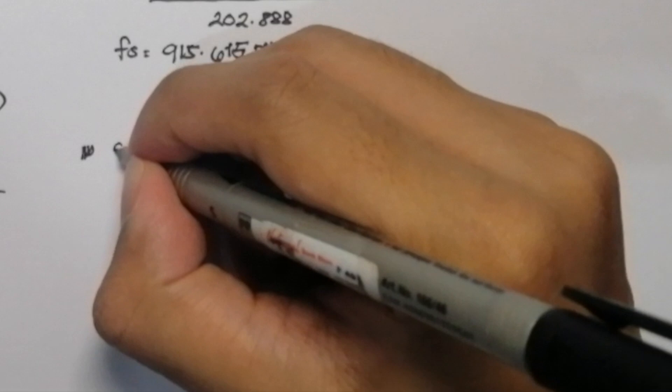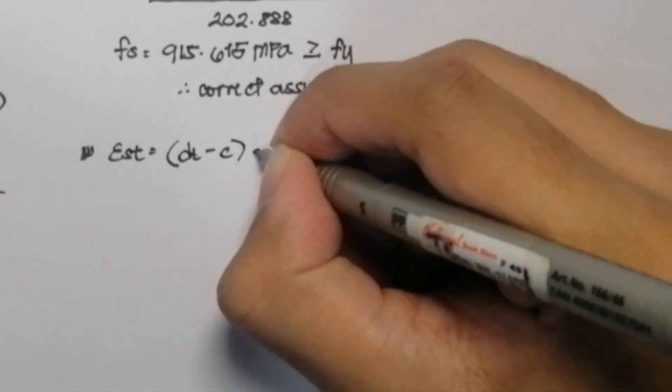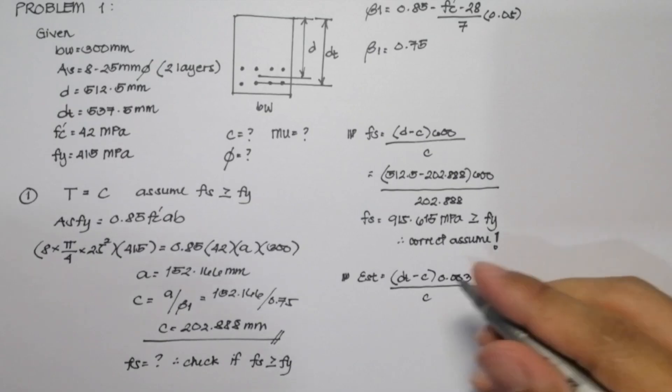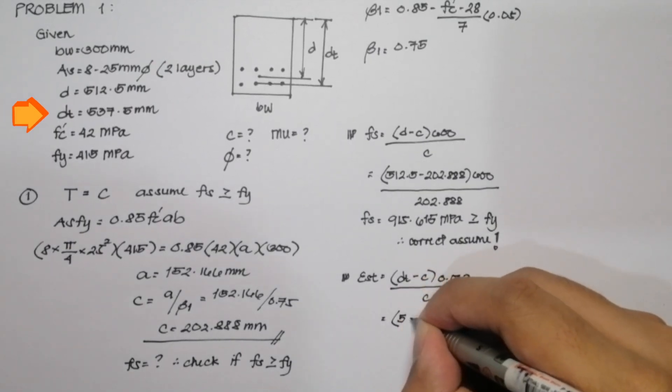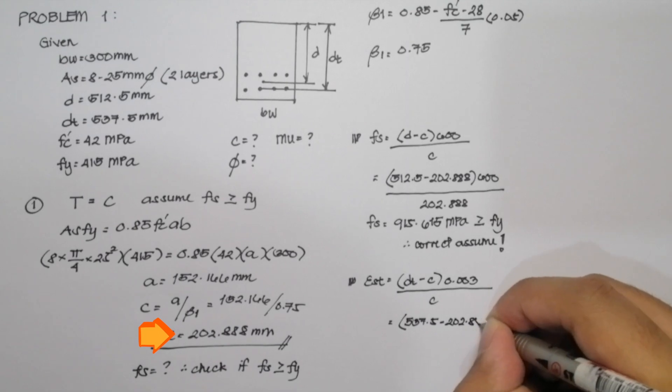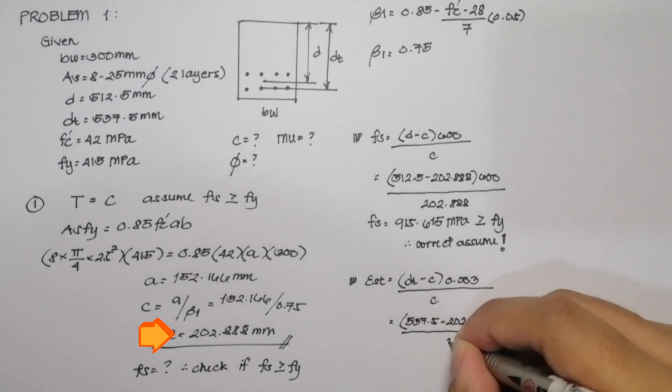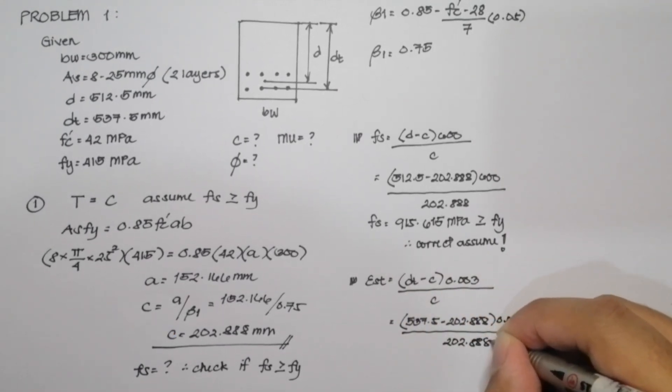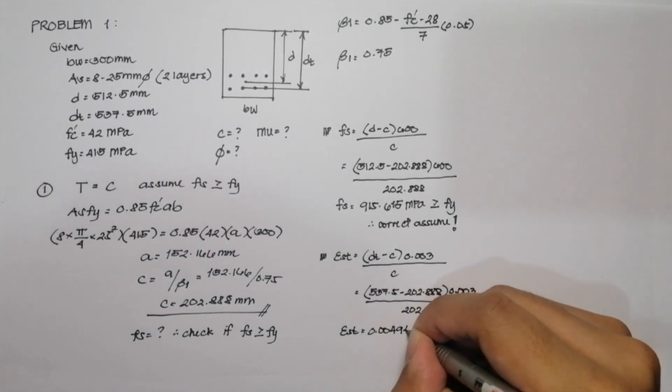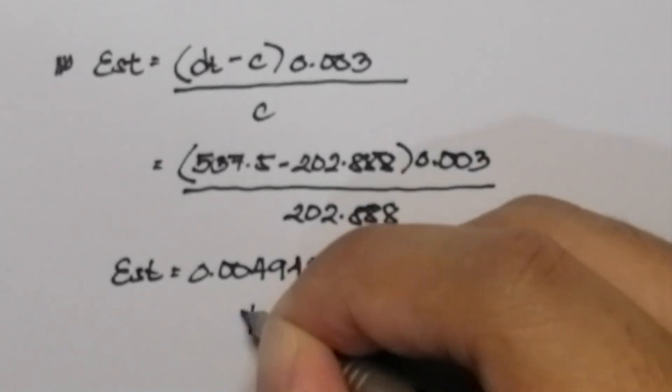Now we are going to solve for the value of the strain in the steel. We can use the formula Dt minus C all multiplied by 0.003 divided by C. By substituting our values, Dt is equal to 537.5 minus C, 202.888 multiplied by 0.003 divided by C, 202.888. Solving for our value, we got a value of 0.004948. As you can see, it is less than 0.005, it means that the section will lie in the transition region.